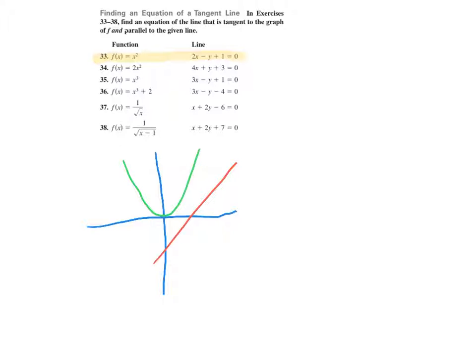they want the equation of a line that is tangent to our graph and parallel to our line. So they want that line, the line that is in yellow.